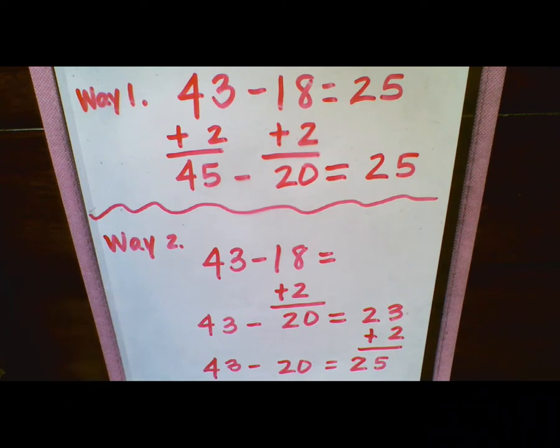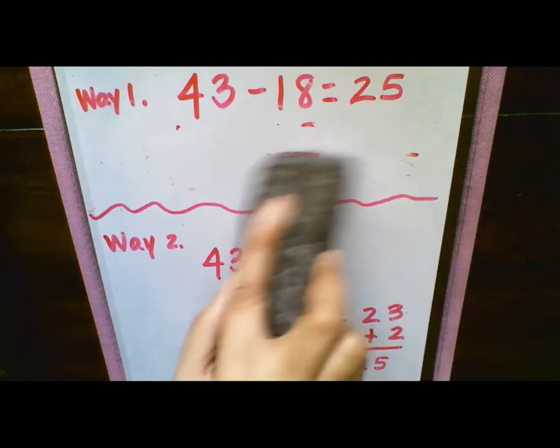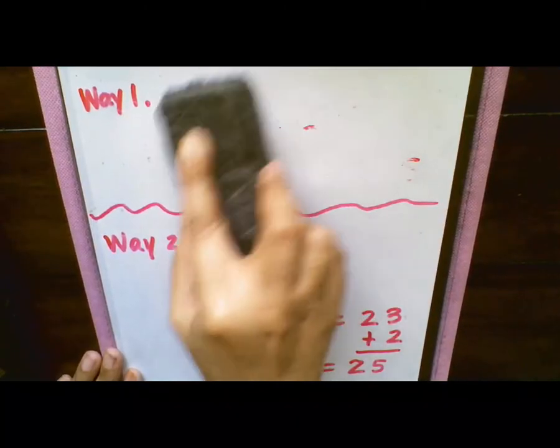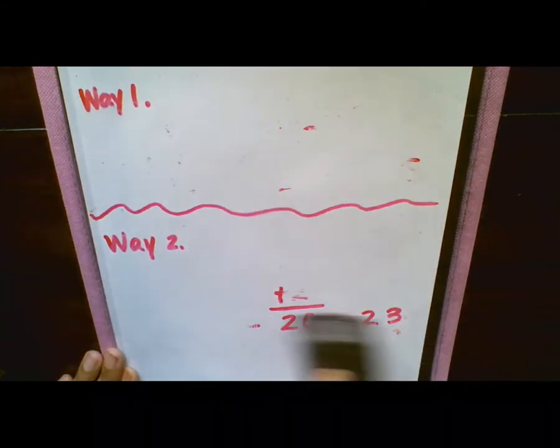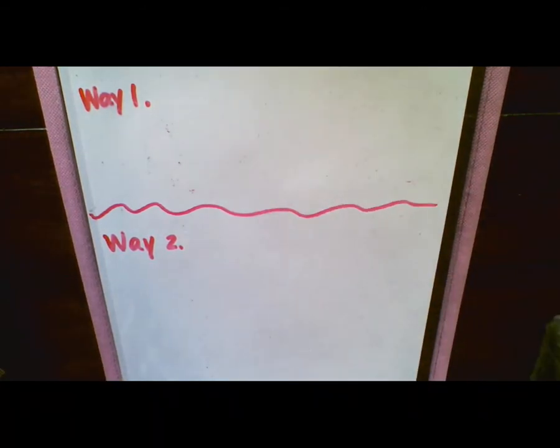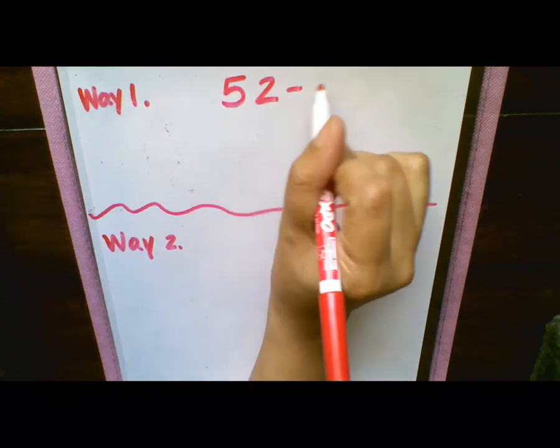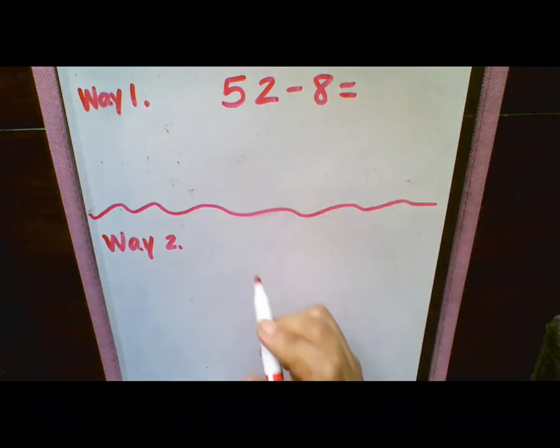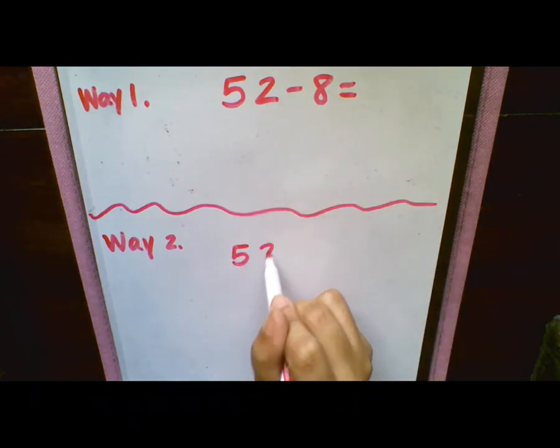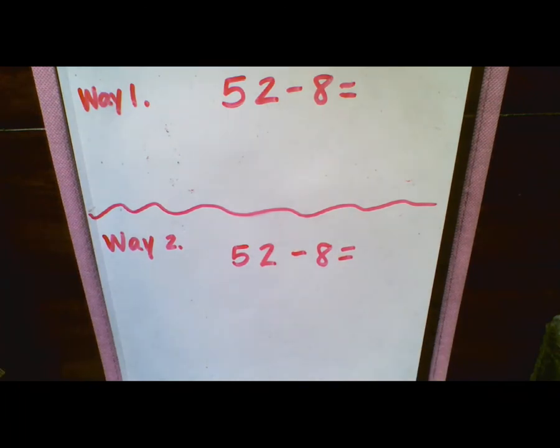So we're going to do another one. And I'm going to show you it with both ways. So I'm going to go ahead and erase here. And I'm going to do the same thing here. But I'm going to use both ways to show you. So our problem here is 52 minus 8. And I'm going to write it here as well, because we know we're going to use the same problem, just using a different method to get the answer.